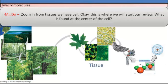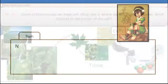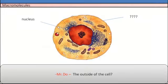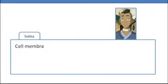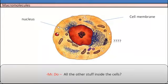This is where we start our review. What is found at the center of the cell? And the outside of the cell? All the other stuff inside the cells are called what?